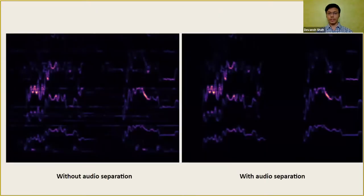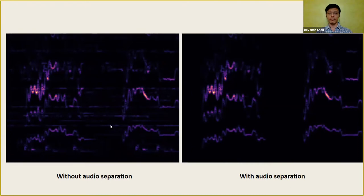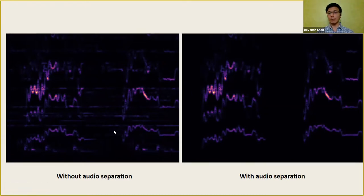These are some examples of spectrograms. The first spectrogram is without audio source separation, and the second is with audio source separation. You can see the second spectrogram is much cleaner — a lot of noise and unwanted frequencies are removed. In the first spectrogram, you can see many horizontal lines created by an instrument called Tanpura, a drone instrument constantly being played in the background during a performance.